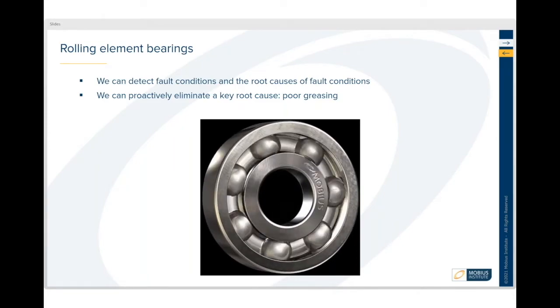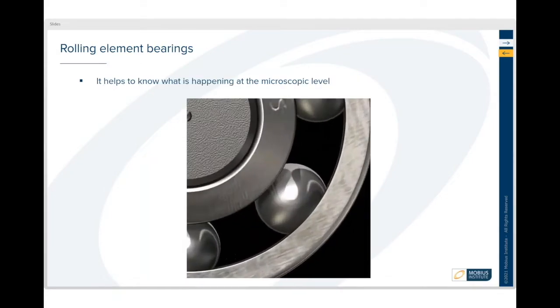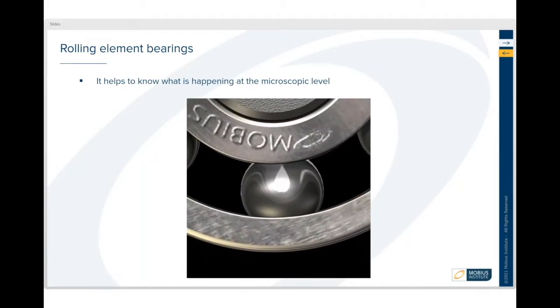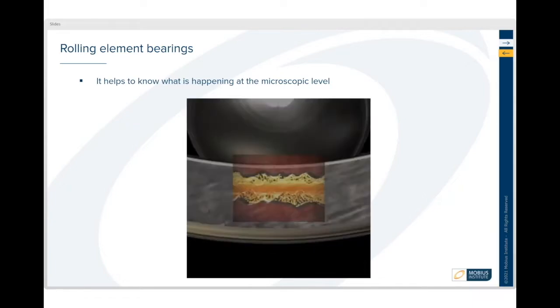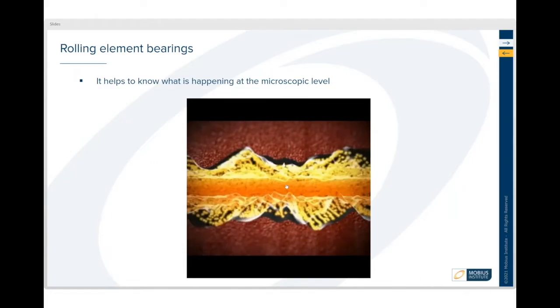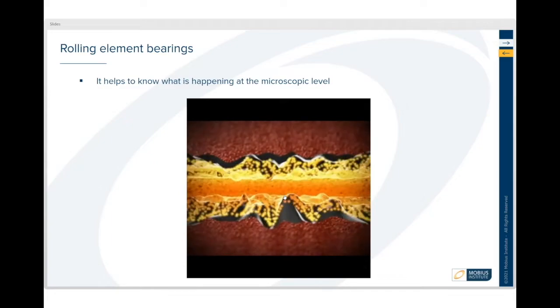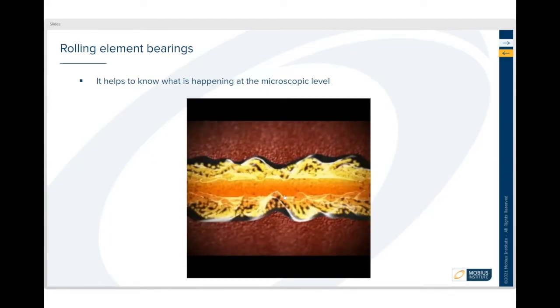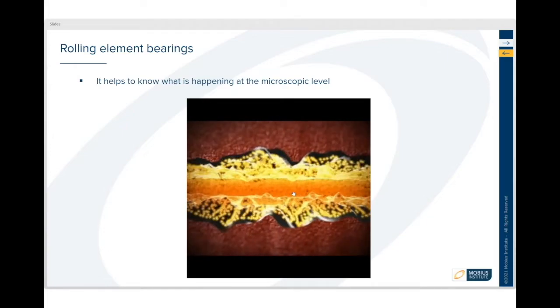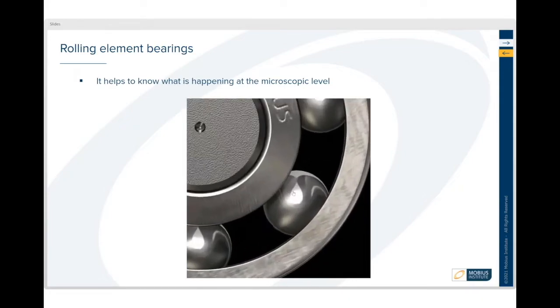It's just important to understand what's happening inside a bearing because we might think of them as being pretty tough, steel and all. But if we get down to the microscopic level, there's less than a micron, a millionth of a meter—a meter is about a yard if you're that way inclined. But as those surfaces come closer together because there's a lack of lubricant, the sound will change. If there's damage in there, the sound will change but it'll be periodic.